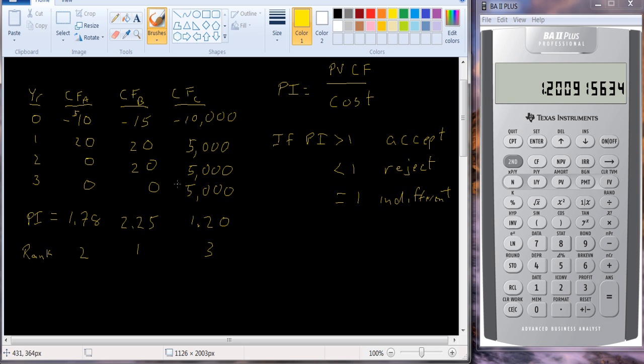And you can see that essentially for every dollar invested in B, you're bringing back $2.25 in present value terms. For C, you're only bringing back $1.20.